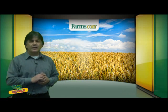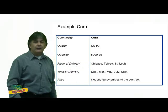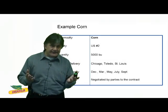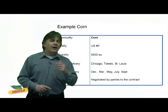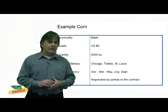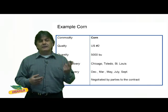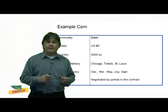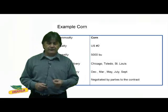Let's look at some futures contract specifications. This is an example of corn, which trades on the Chicago Mercantile Exchange, also known as the CME. The quality is U.S. number two, quantity is 5,000 bushels, place of delivery is Chicago, Toledo, or St. Louis, time of delivery includes December, March, May, July, and September contracts, and the price is negotiated by the parties to the contract.